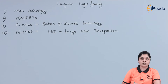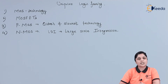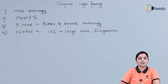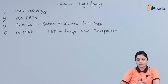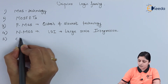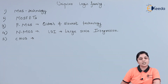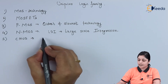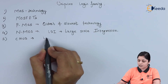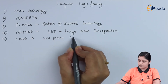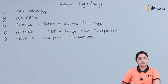C-MOS technology uses push-pull arrangements of P-channel and N-channel MOSFETs, and because of that it is used for low power consumption circuits. This is the advantage of C-MOS circuits — it uses a very small amount of power. Examples include calculators.